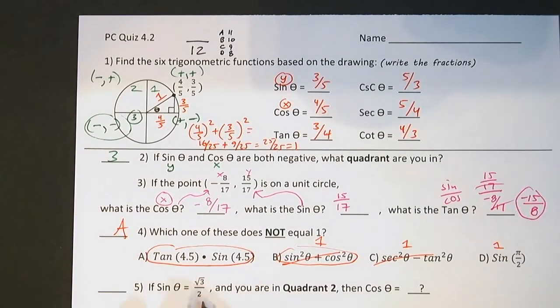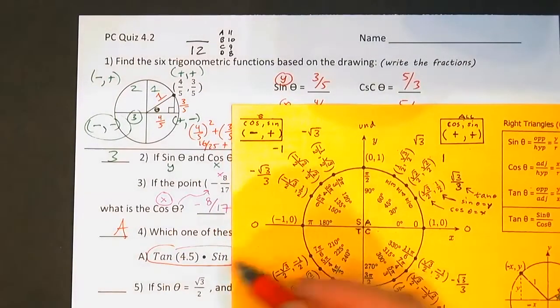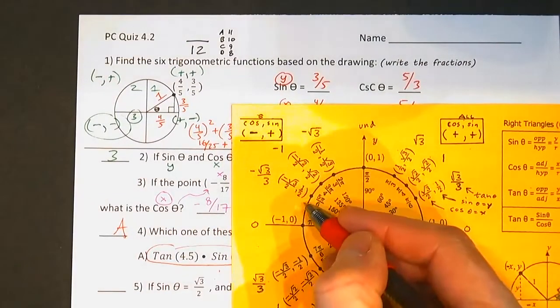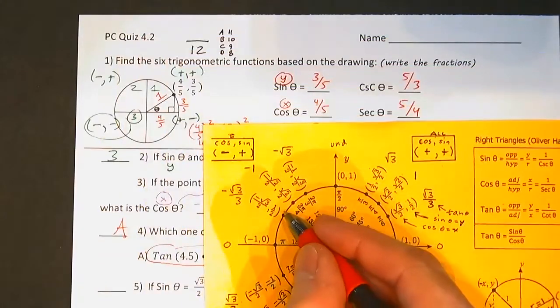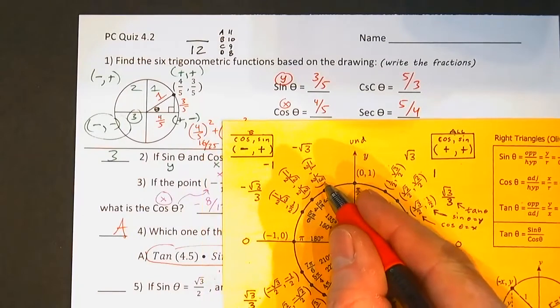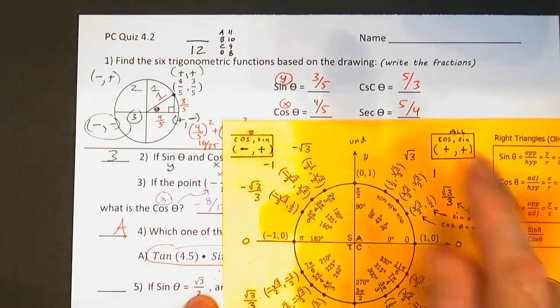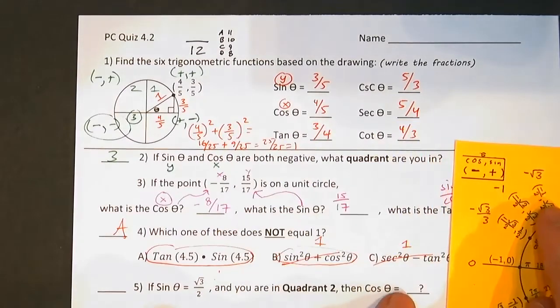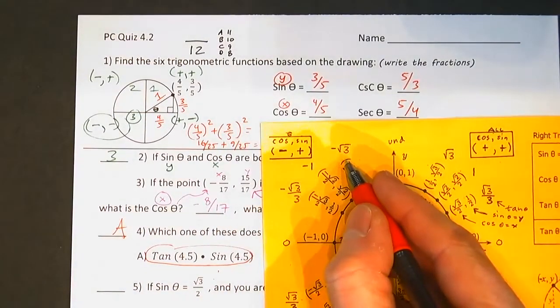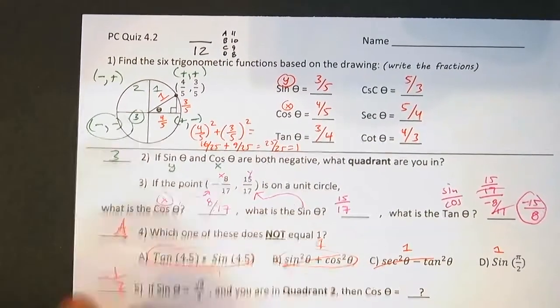Lastly, if the sine is radical 3 over 2 and you're in quadrant 2, what's cosine? If the sine is radical 3 over 2, the sine is the y. So let's see. Right here, here it is. Radical 3 over 2. I'm in quadrant 2. Don't look at this one, that's quadrant 1. Quadrant 2. The cosine is, well, this is a sine. There's the cosine. Negative 1 over 2. So negative 1 over 2.